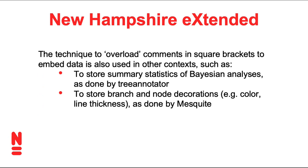This is just one example of the hack where square brackets that used to mean a comment in Newick have taken on additional meaning. You might come across this, for example, when you do a Bayesian analysis and have a large set of trees, then summarize those trees using TreeAnnotator. It is able to compute the approximated posterior probability for the different nodes in the tree, and that information is injected into the tree description using these square brackets. Another example is when in Mesquite you decorate branches and nodes — for example give them different colors or line thicknesses — Mesquite stores that information also using these square brackets.